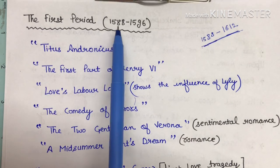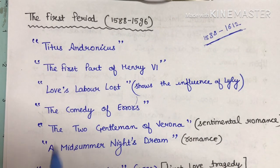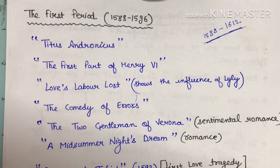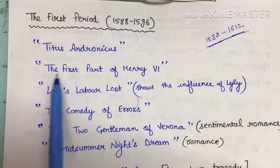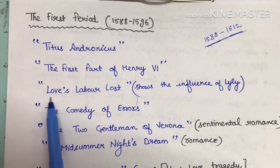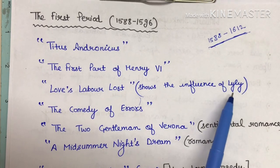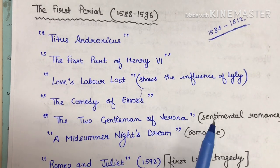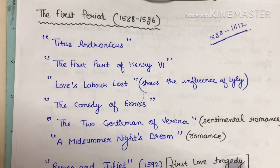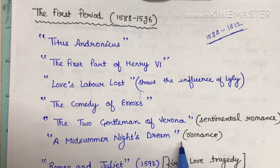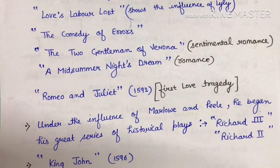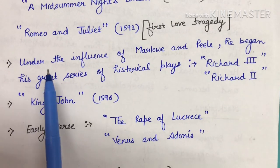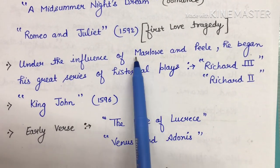The first period is 1588 to 1596 — a period of early experimentation. Shakespeare first retouched and revised Titus Andronicus, the first part of Henry 6, and Love's Labour's Lost, which shows the influence of Lyly. The Comedy of Errors, The Two Gentlemen of Verona (a sentimental romance), and A Midsummer Night's Dream also belong here. He wrote his first love tragedy, Romeo and Juliet.